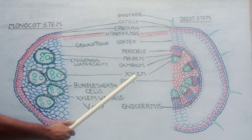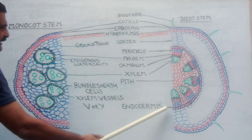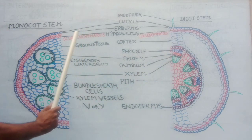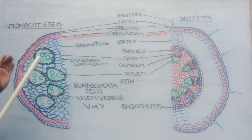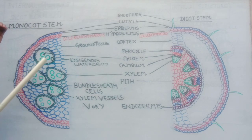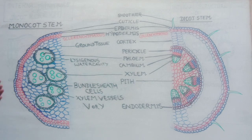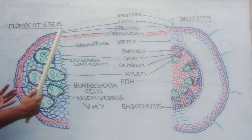In case of dicot stem there is a conjoined collateral open type vascular bundle because cambium is present in between the phloem and xylem. But in case of monocot stem, the vascular bundles are conjoined — meaning both xylem and phloem lie on the same radius — but they are close type because cambium is not present between the xylem and phloem in case of the monocot stem.